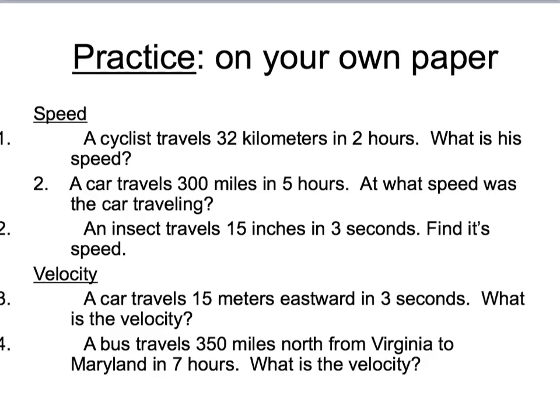So the first question says, a cyclist travels 32 kilometers in two hours, and you want to know what his speed is. So just as we've done in the past, we always write out the formula first, so we'll have speed is equal to distance divided by time. And again, we're looking for speed, so we're going to go ahead and start out by saying S equals, when you're reading that first sentence, it says 32 kilometers in two hours, so we have to decide what the distance would be.